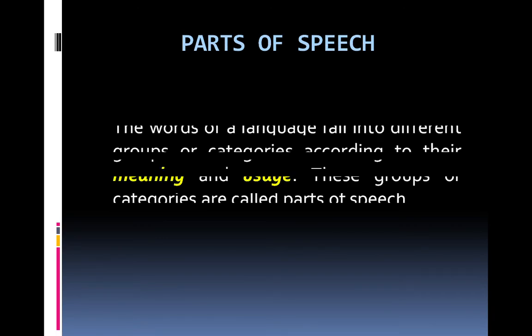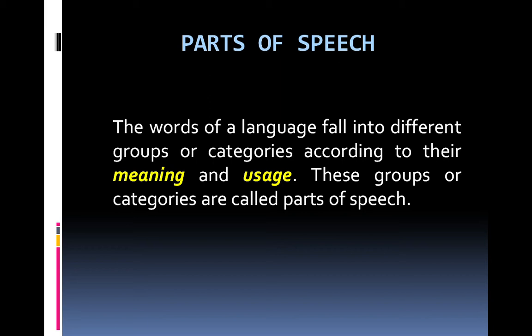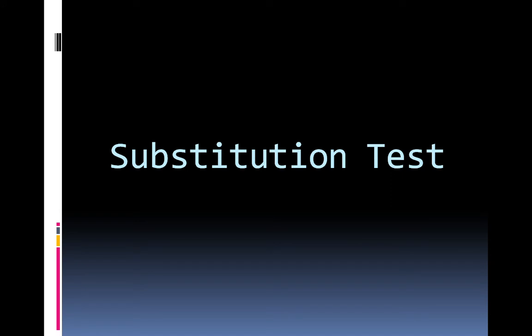Now what are parts of speech? The words of a language fall into different groups or categories according to their meaning and usage. These groups or categories are called parts of speech. To clearly understand this concept, we are going to have a demonstration — a substitution test. In the substitution test, we replace a word in a sentence with another word and see the impact. If the new word fits well into the sentence and the sentence still remains meaningful and intact, we can assume that both words belong to the same class of words and have the same grammatical role and function.